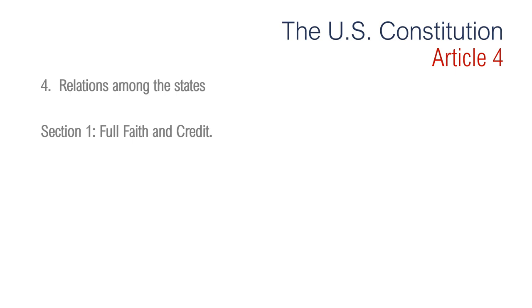Moving on to Article 4, regarding relations among the states. Section 1 is regarding full faith and credit. It says that all states are required to respect one another's laws, their records, and their lawful decisions. There are exceptions, however. A state does not have to enforce another state's criminal code, nor does it have to recognize another state's grant of a divorce if the person obtaining the divorce did not establish legal residence in the state in which it was given.